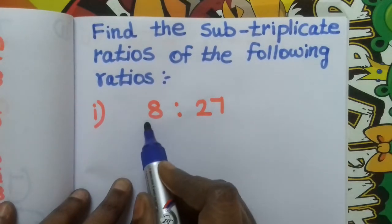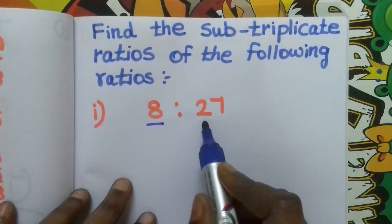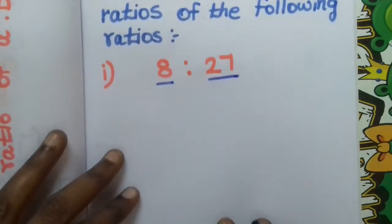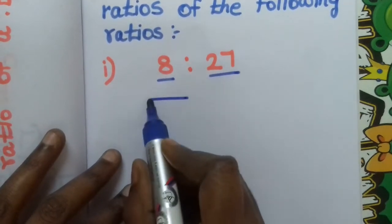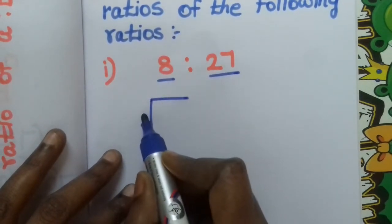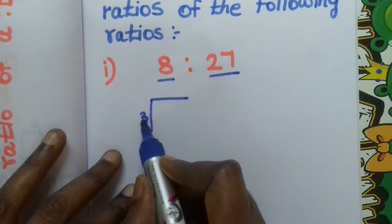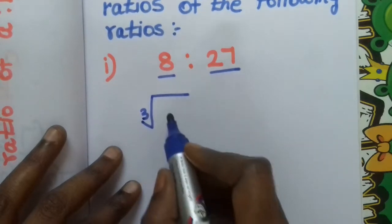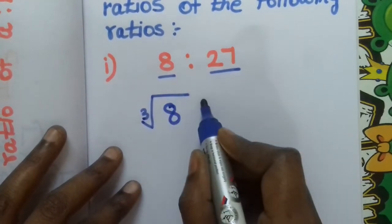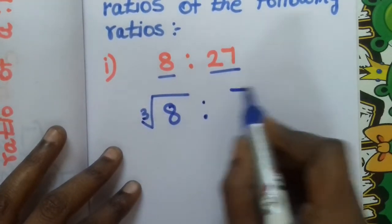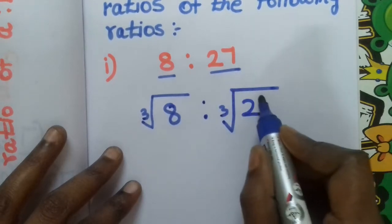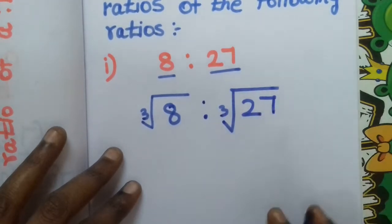So the antecedent is 8 and the consequent is 27. We take the cube root of both. So the cube root — using the radical symbol with 3 — of the antecedent is to the cube root of the consequent, which is 27.